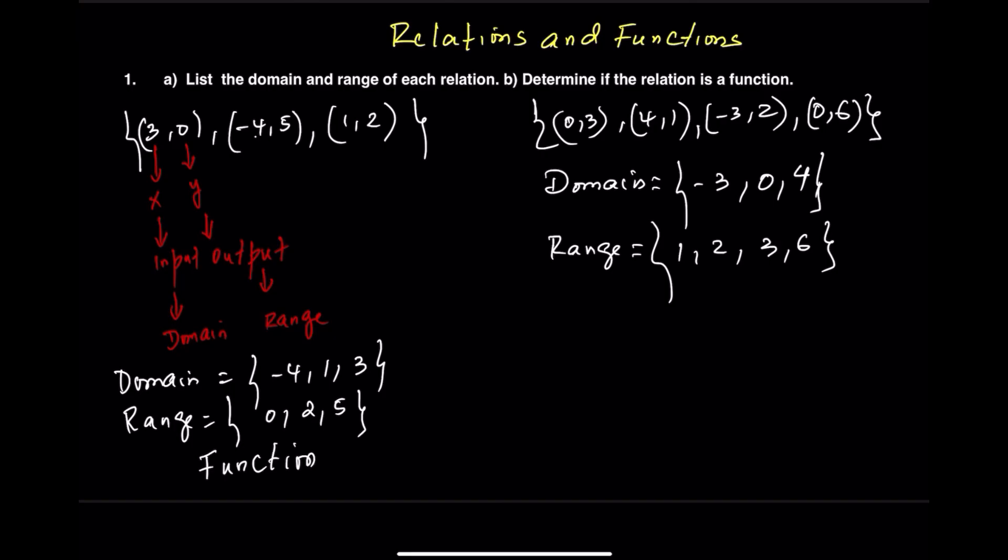Now check out the second set: (0, 3), (4, 1), (negative 3, 2), and again (0, 6). Notice that the input value 0 shows up twice—once with 3, and again with 6. This creates a conflict. So this relation is not a function. The key idea: if an input value repeats with different outputs, it fails the function test.